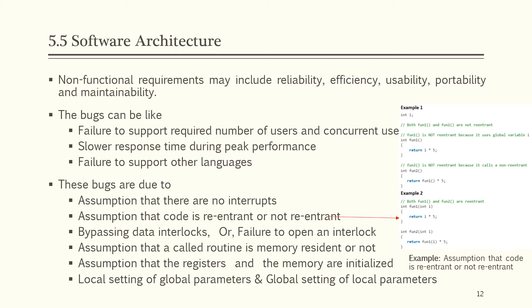Another assumption causing bugs is that code is re-entrant or not re-entrant. A function is re-entrant if it can be invoked while already in the process of execution. In the example, Fun2 is a re-entrant function — if an interrupt pauses its execution and shifts control to Fun1, after Fun1 completes, control returns to Fun2 which re-enters the execution phase.